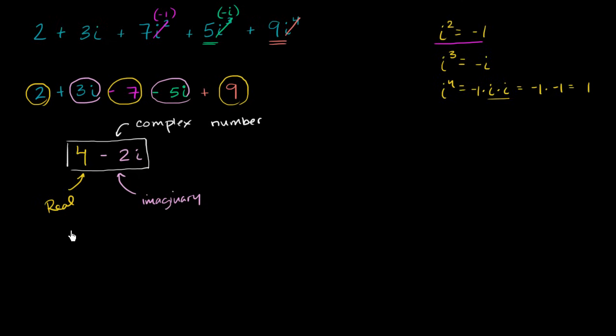Can't any real number be considered a complex number? For example, if I have the real number 3, can't I just write the real number 3 is 3 plus 0i? And you would be correct. Any real number is a complex number. You could view this right over here as a complex number. And actually, the real numbers are a subset of the complex numbers.